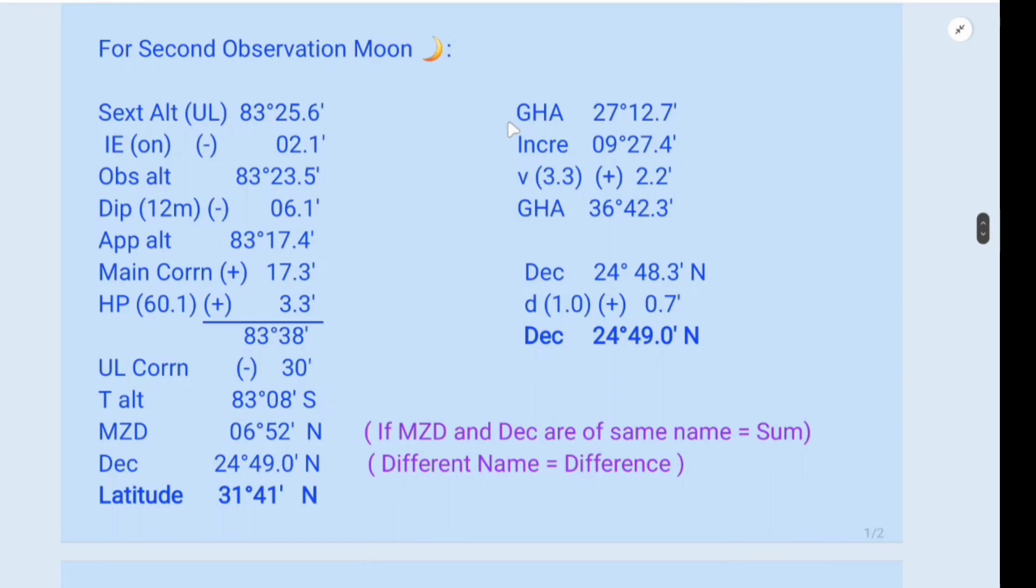GHA also referring from the Almanac on 16th January, GHA is 27 degrees 12.7 minutes. Increment from the increment table 09 degrees 27.4 minutes. v correction is 3.3, for 3.3 is 2.2 minutes. So you add together, GHA is 36 degrees 42.3 minutes.